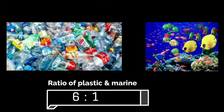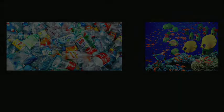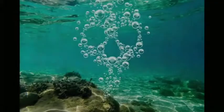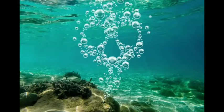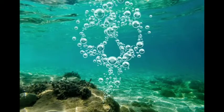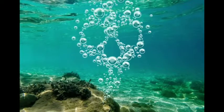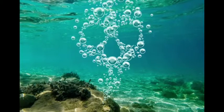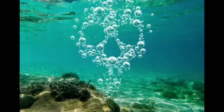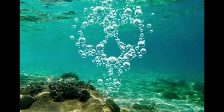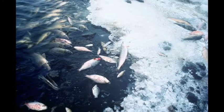The ratio of plastic to marine animals in the ocean is 6 to 1. This plastic is very dangerous for all living things. Over 270 species have currently been affected, and over 1 million birds and 100,000 marine mammals have died.